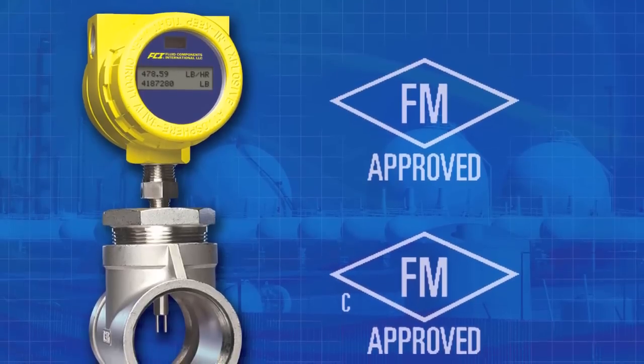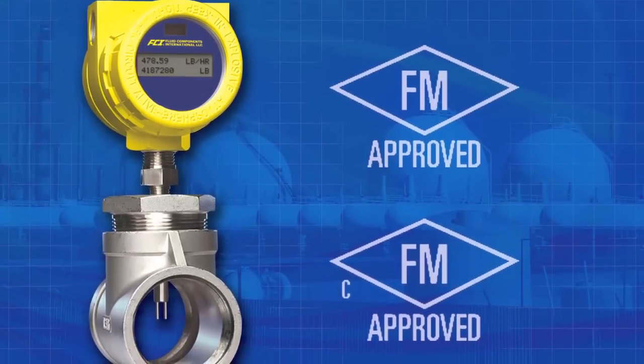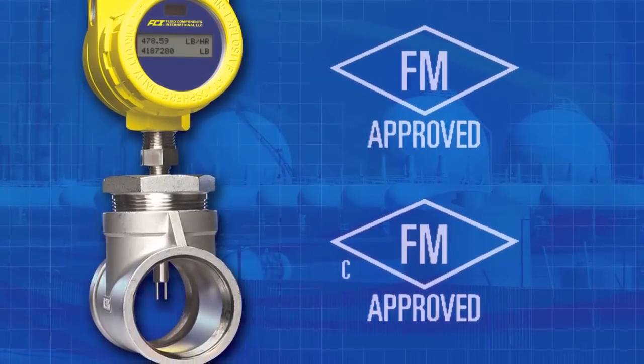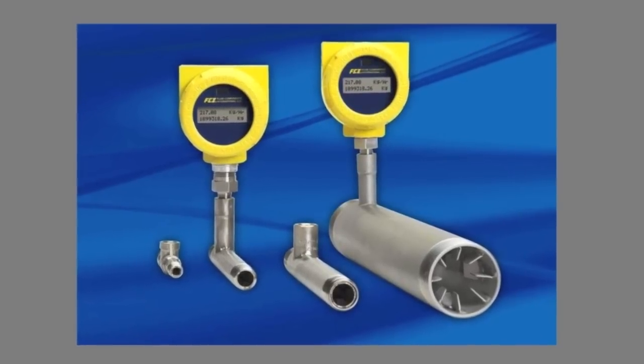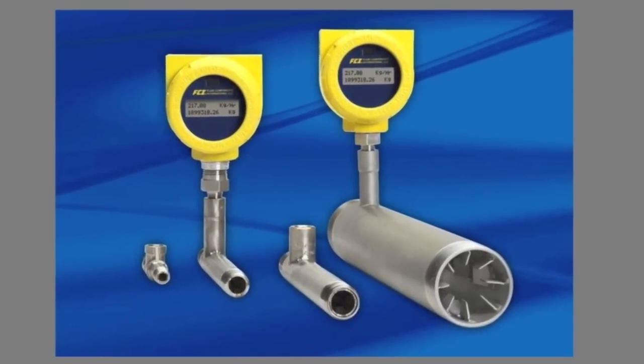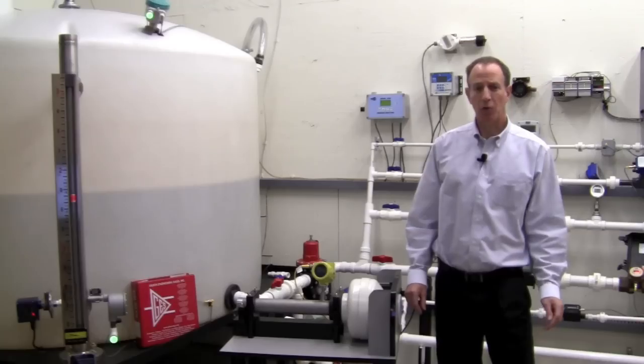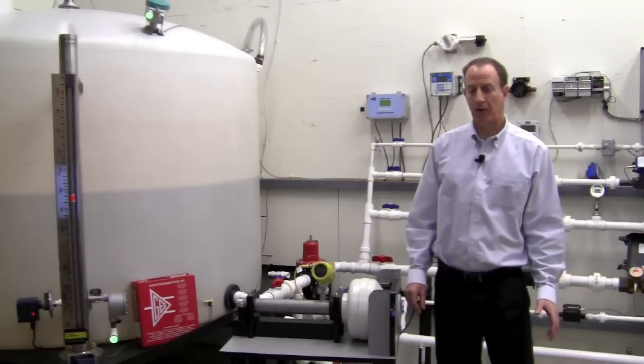The ST75 is an inline flow meter for line sizes from a quarter inch through two inch. And the ST75V is an inline flow meter with integral flow conditioner. This will allow you to install the flow meter in pipe sections with a minimal straight run.